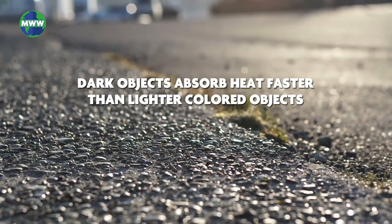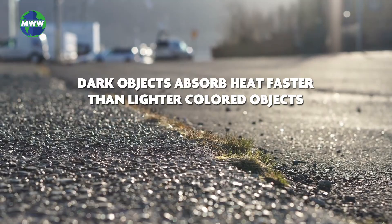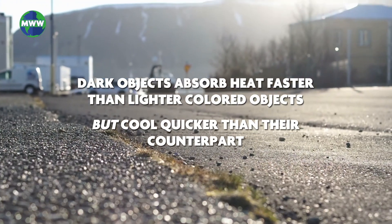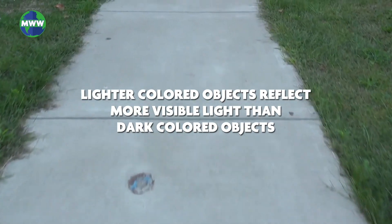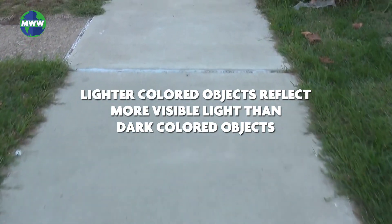At the ground, dark objects absorb heat faster than lighter colored objects, but cool quicker than their counterpart. Lighter colored objects reflect more visible light than dark colored objects.